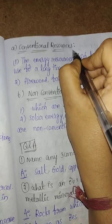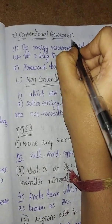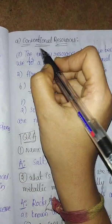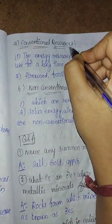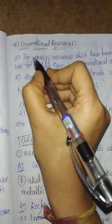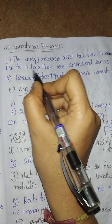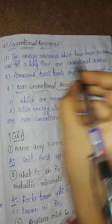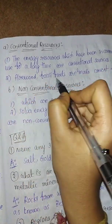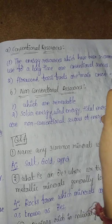Conventional resources can be used in common. The energy resources which have been in common use for a long time are conventional resources. Firewood and fossil fuels are main conventional resources.